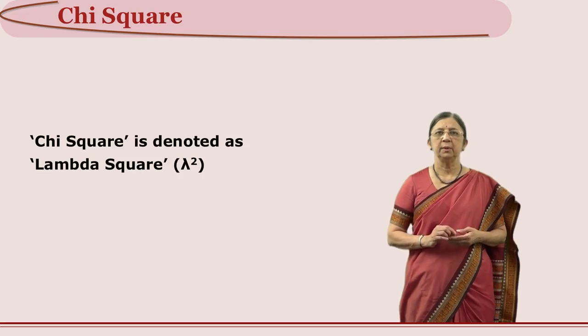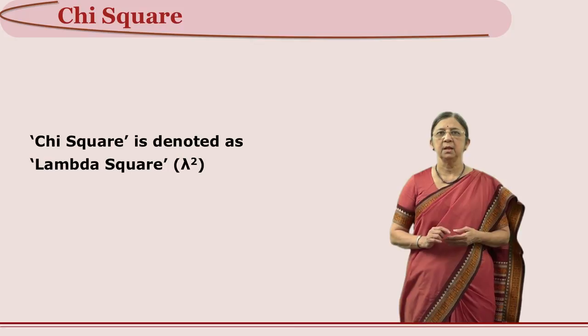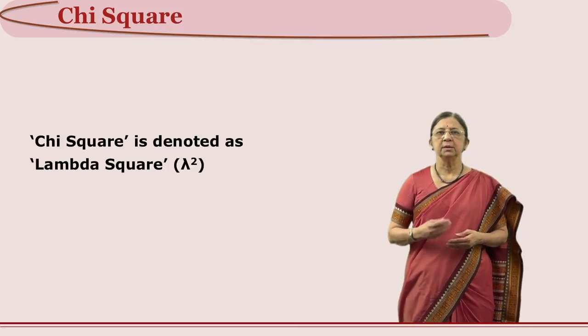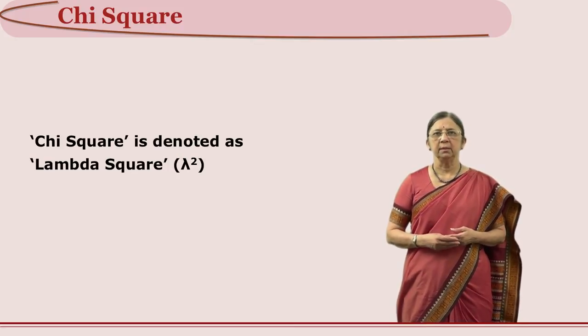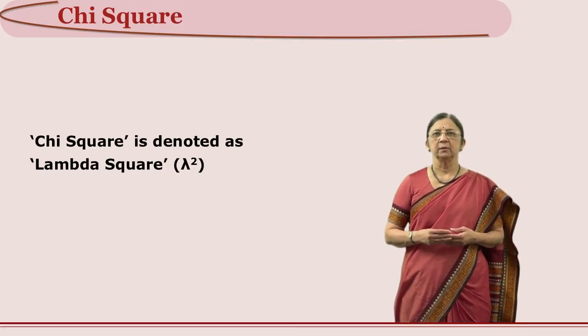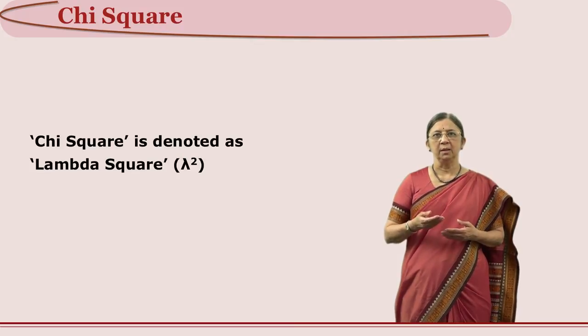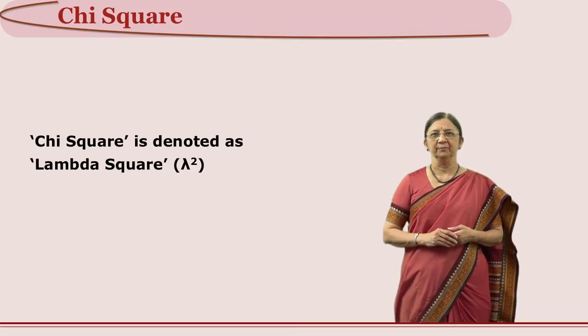Chi square is spelled as CHI square and it is denoted as χ² (chi square symbol). To show you the similarity, it is like the letter Y upside down.